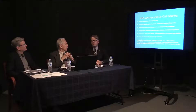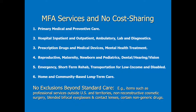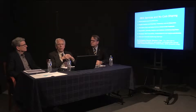Now, Medicare for All services and no cost sharing. Under this proposal, there are six items. The services that people would get for no cost sharing would be: primary medical and preventive care, hospital inpatient and outpatient, ambulatory lab and diagnostics, prescription drugs and medical devices, mental health treatment, reproductive, maternity, newborn and pediatrics, dental, hearing, vision, emergency, short-term rehab, transportation for low-income and disabled, and home and community-based long-term care. This is a standard level of care beyond what we're getting in anything like Medicare at the present time — this benefit package is certainly more generous than the current Medicare program.